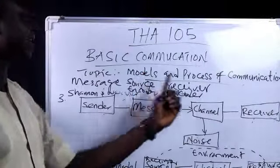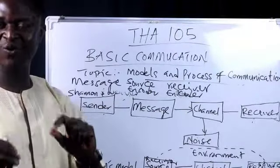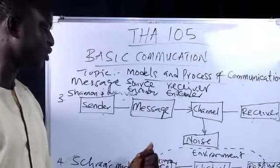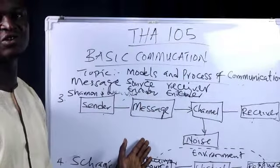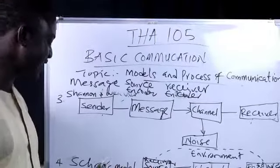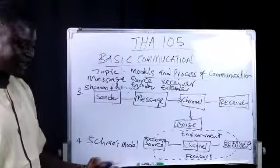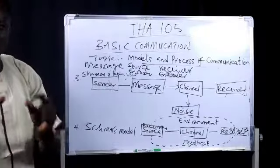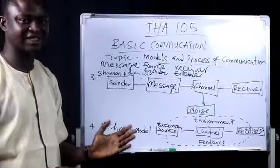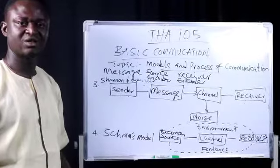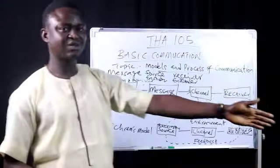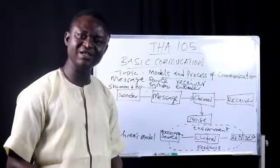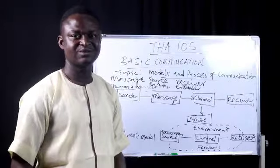In all, the essence of models and process of communication is to enhance the flow of information from one source to another, so that there will be better impact. From all these models, the most interesting form of communication is the one modeled by Wilbur Schramm, who sees communication as a transactionary process between a source and the destination, whose roles are not static — unlike the linear groups of models that look at communication as a straight-jacket approach where the speaker sends but does not receive feedback.